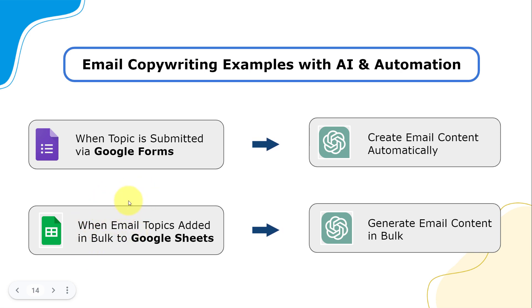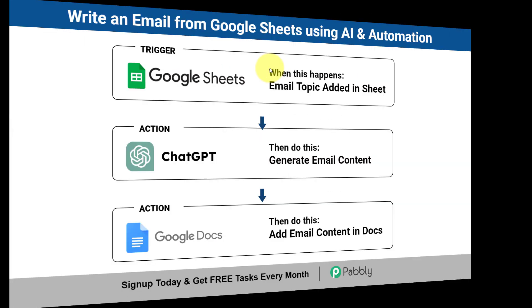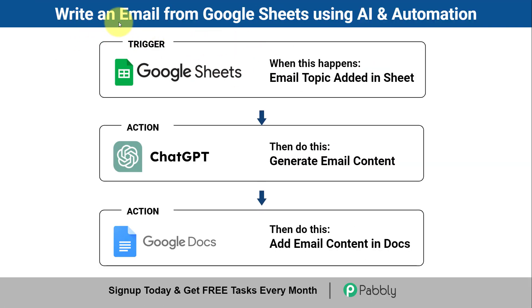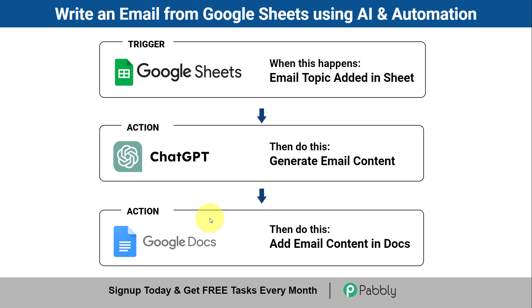Simply add a list of email topics in your spreadsheet in bulk, and the content will be generated in bulk using this ChatGPT application. I will show you the process of how you can write an email from Google Sheets using AI and automation — add your email topic in the spreadsheet, connect it with ChatGPT, and it will generate the email content automatically, which will also be added to the Google Docs application.